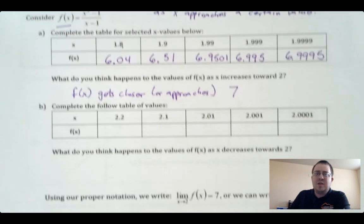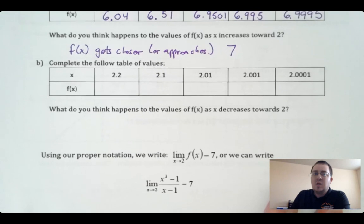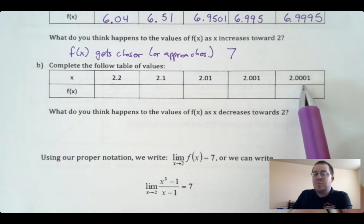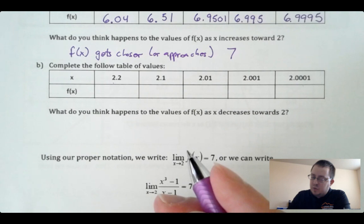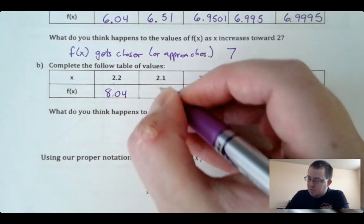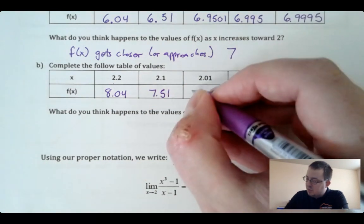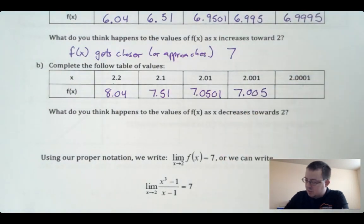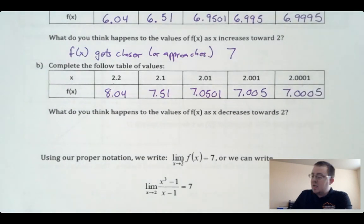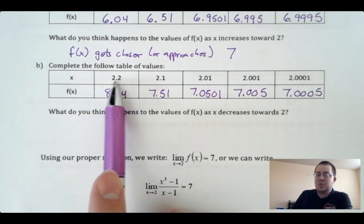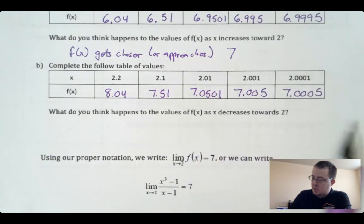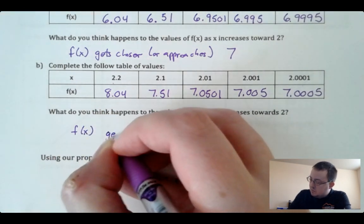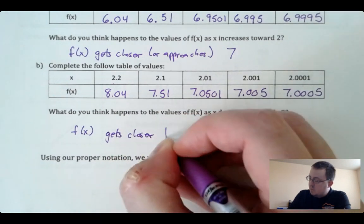That's from one side — from values less than 2. What happens as we go from values larger than 2 down toward 2? Plugging back into f of x: 2.2 gives 8.04, 2.1 gives 7.51, 2.01 is 7.0501, 2.001 is 7.005, and the last one is 7.0005. So as x decreases towards 2, f of x gets closer to 7 again.